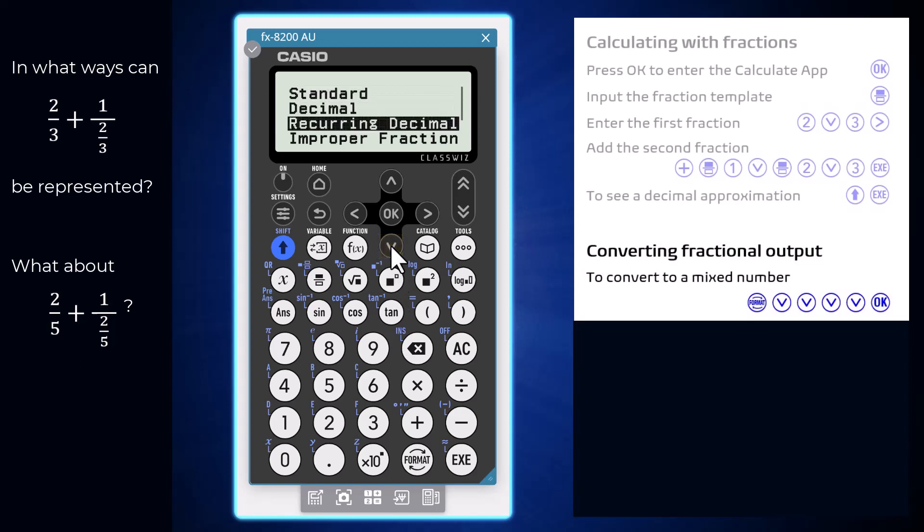Arrowing down to mixed fraction and pressing OK gives the output of 2 and 1 sixth.